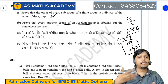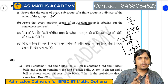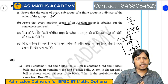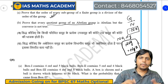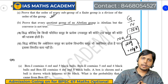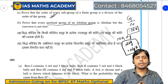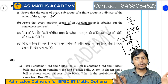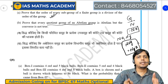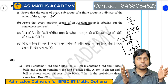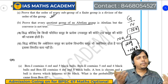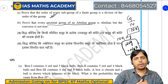हम बार-बार classes में बोलते हैं कि भारी topic को भी पढ़ना है, उसमें एक certain level of expertise हासिल करना है। आसान topic में तो पूरा अच्छे से काम करना है। कुछ भी छोड़ना नहीं है। Mathematics optional लेकर चल रहे हैं तो 5-6 महीने का हमारा course join कीजिए, problem sets अच्छे से बनाइए, discussion कीजिए, class attend कीजिए।